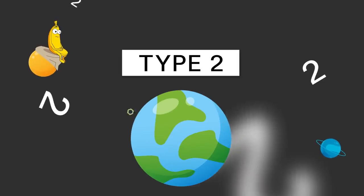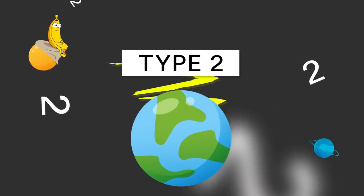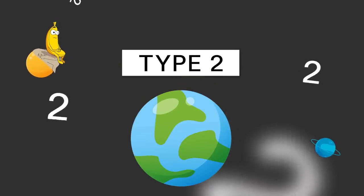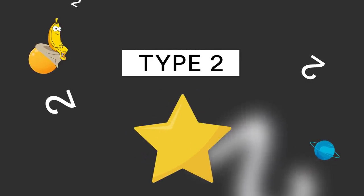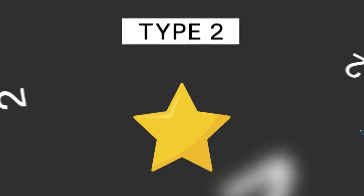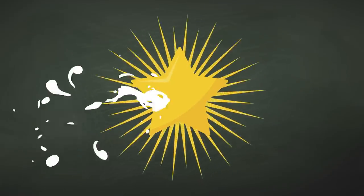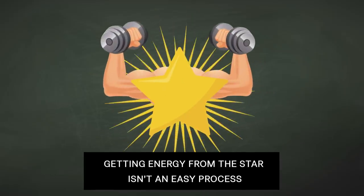Type 2: As soon as a civilization reaches Type 1, it will exhaust the power of a planet, and it most likely would leave its own planet looking for alternative energy sources, like a star for example. Type 2 means a civilization becomes interplanetary. Getting energy from the star isn't an easy process.